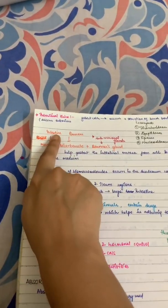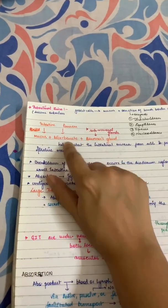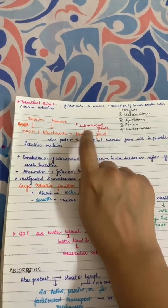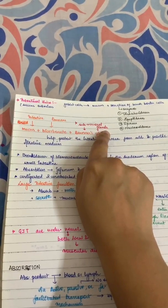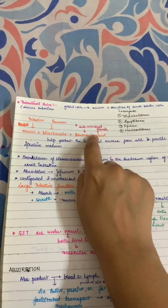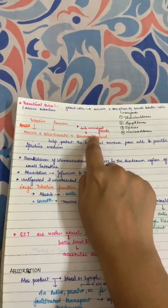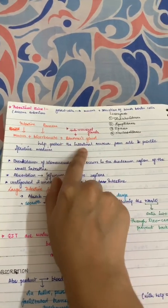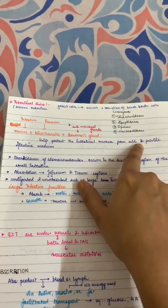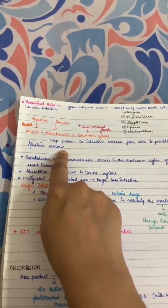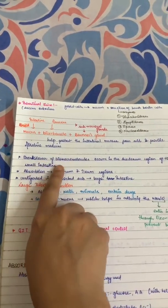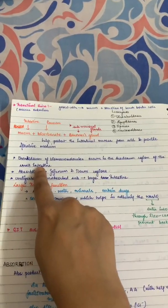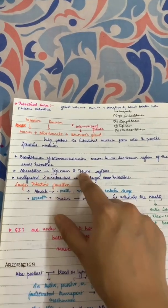In the intestine, mucus is secreted, and the pancreas secretes bicarbonate. Brunner's gland, the submucosal gland in the duodenum, also secretes mucus, which helps protect the intestinal mucosa from acid and provides an alkaline medium. The breakdown of macromolecules occurs in the duodenum region of the small intestine, and then absorption occurs in the duodenum and ileum regions.